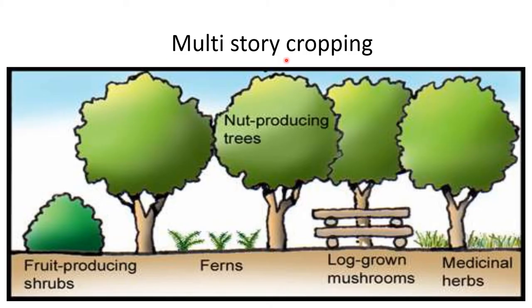Multi-storied cropping. Growing plants of different heights in the same field at the same time is termed as multi-storied cropping. It is the practice of cultivating different crops of varying height, rooting pattern, and duration together. It is mostly practiced in orchard and plantation crops.